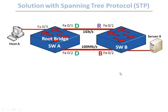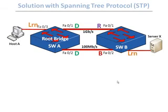Spanning tree behaves the same way even when you connect new hosts to a switch. Even though end host devices cannot create a loop, spanning tree doesn't know that, so those ports must go through listening and learning states before being opened — which is a long wait for an impatient user. There had to be a way to speed up the process for end host ports.